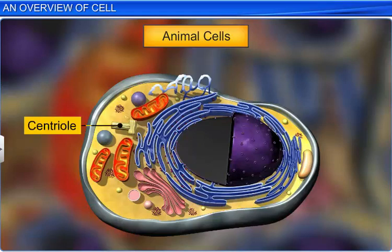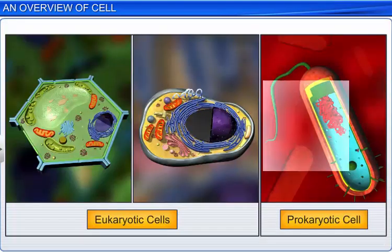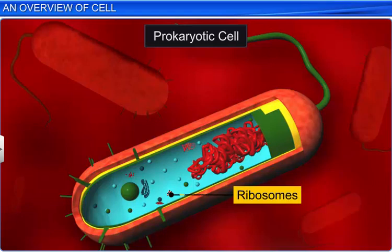The cytoplasm of prokaryotic cells, on the other hand, lacks membrane bound organelles, but contains ribosomes and fragments of extra-chromosomal DNA called plasmids.